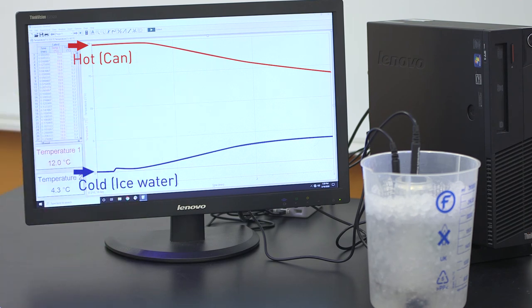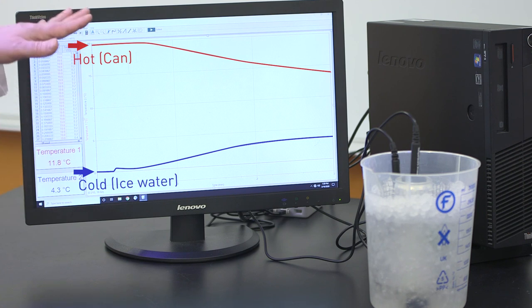Now if we waited for a very long period of time so that we allowed all the ice to melt and we had enough ice in here, it would probably come all the way back down to zero degrees and both of them would be at that temperature.